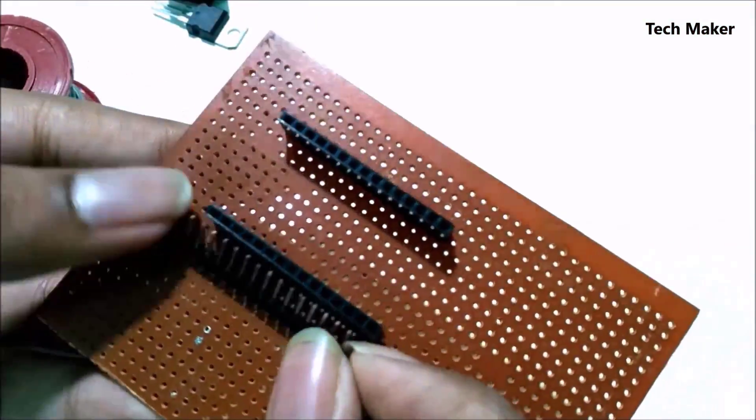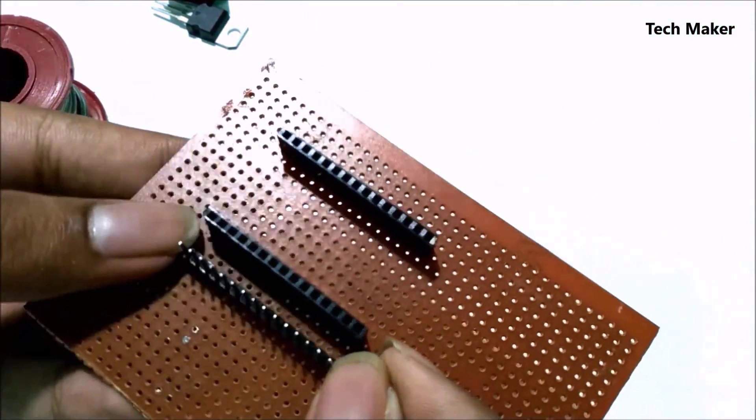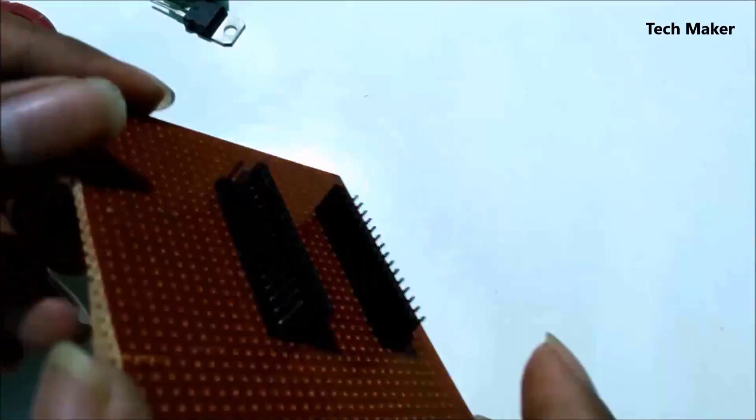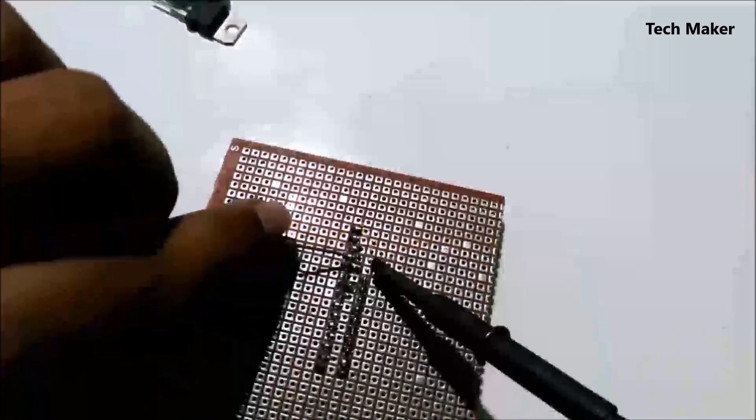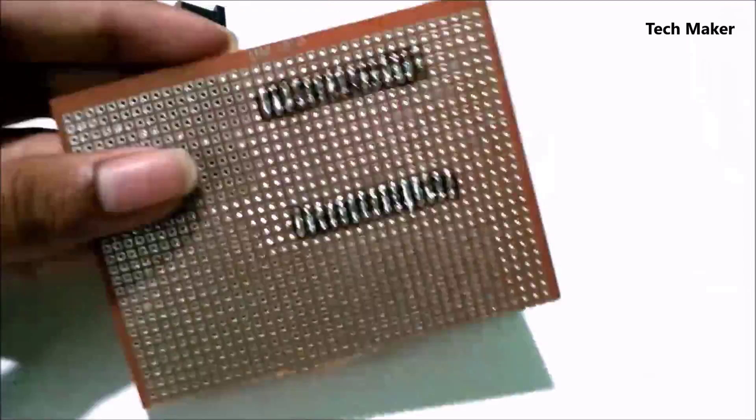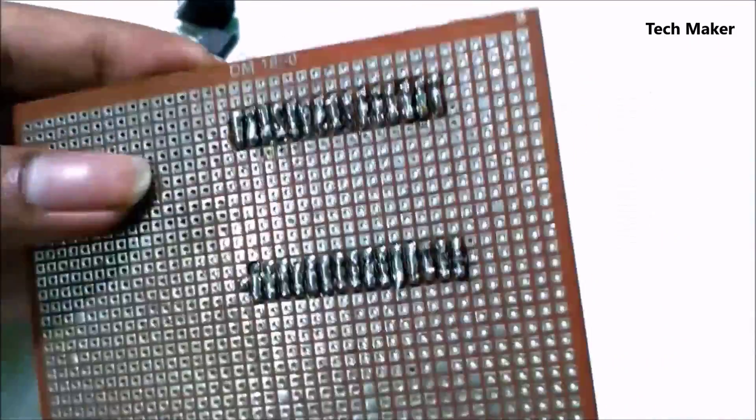Now insert the male header pins beside the female header pins to take the output from the NodeMCU module. Now solder these male pins. You have to interconnect the beside male pins with the female pins. After soldering, it looks like this.